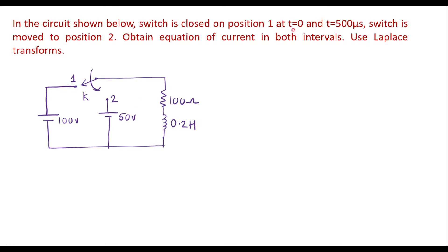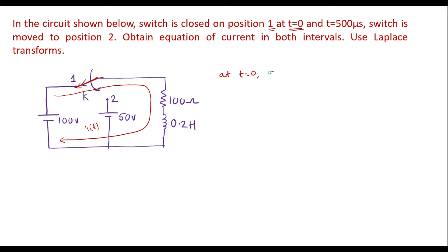This is the given circuit. At t equal to 0, the switch K is connected to position 1. When the switch is connected to position 1, the 50-volt circuit is open circuit. We can see that the current will flow in this direction. Let the current through this be I of t. At t equal to 0, switch K is connected to position 1. Now let me apply KVL to this loop.